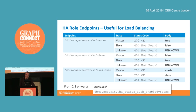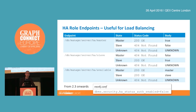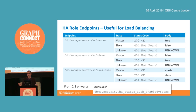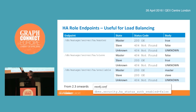Once you've got a cluster up and running, there are a number of metrics and bits of information you can take advantage of within your application and monitoring tooling to understand the state and health of the cluster. The most important are these HA role endpoints. Every instance in the cluster can be contacted over three different URIs to tell you something about its current role. In this traditional master-slave setup, you can poll these URIs by issuing HTTP GET requests, and the status codes returned will tell you which instance is the master and which are the slaves.